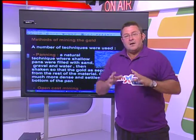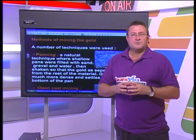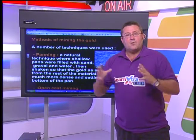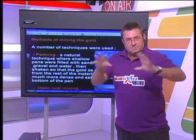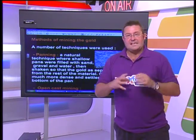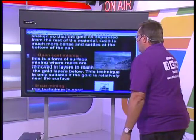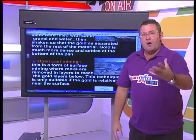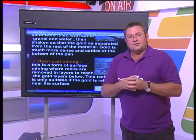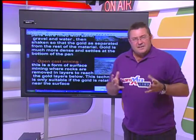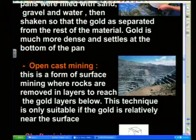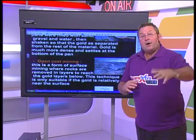Gold was also found at Pilgrim's Rest and a village called Barberton in the Mpumalanga region. But the big strike was at the Witwatersrand in 1887. As more gold was discovered and surface deposits became exhausted, miners needed to go deeper. Another technique is open cast mining — digging down layer by layer through the gold-bearing rock to extract ore and cart it off.